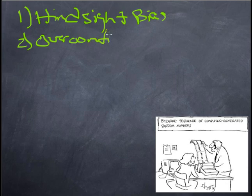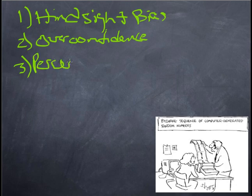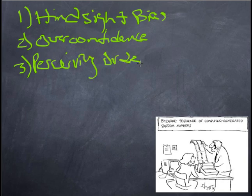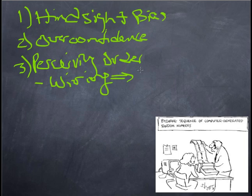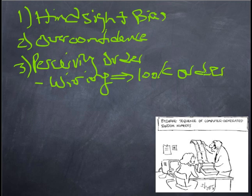And our tendency to overestimate our ability to perceive things and make conclusions and so forth with data. The last one is this one. And this is perceiving order in random events. Perceiving order. And the thing to keep in mind here is one thing is wiring. I mentioned this earlier as we were getting started. We are wired to look for order. And we'll talk about this in another module.